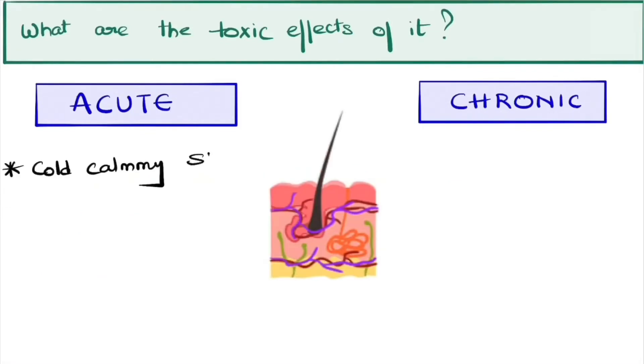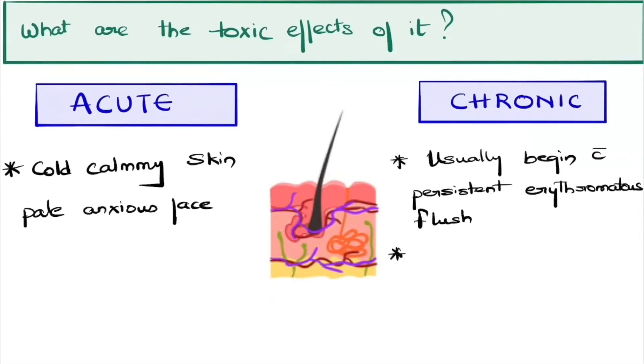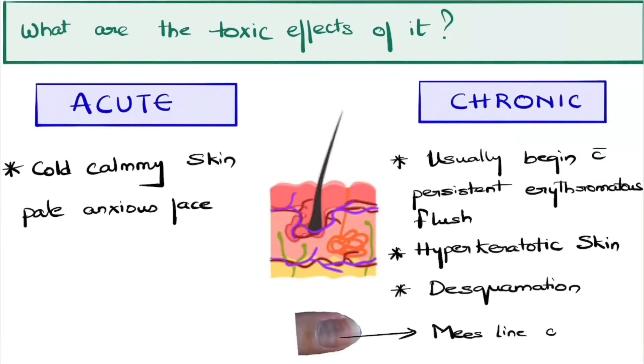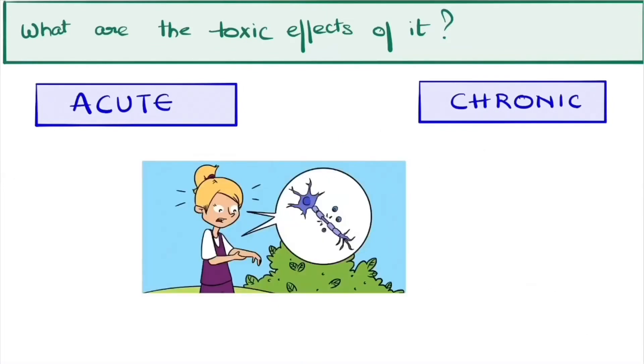The skin turns cold, clammy skin or pale, anxious face in acute poisoning, whereas persistent erythematous flush or hyperkeratotic skin with desquamation is observed and on nails Mees lines are formed. Finally, arsenic affects the nervous system, causes peripheral neuropathy.